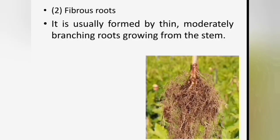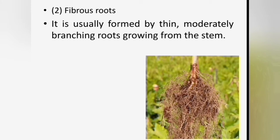Fibrous roots are usually formed by thin, moderately branching roots growing from the stem. A fibrous root system is universal in monocotyledonous plants. Grasses such as wheat, rice and corn are examples of the fibrous root system. Tuberous roots are enlarged structures in some plant species, used as storage organs for nutrients. They provide energy for regrowth during the next growing season. Examples include carrots, potato and dahlia.